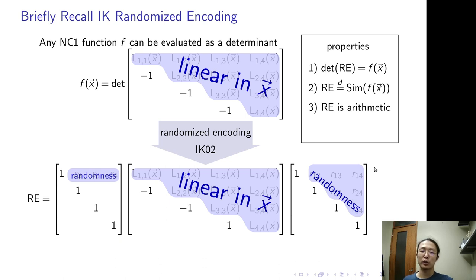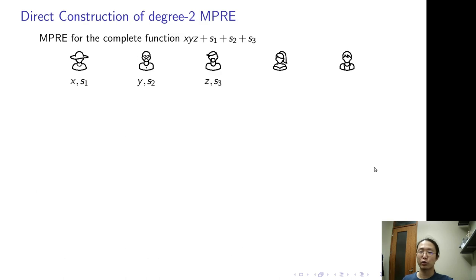It is private. It is also arithmetic. As you can see, it only uses black box field operation. And very importantly, this randomizing encoding is a degree 3 function on input and randomness. As corollary, it is sufficient to just construct MPRE for a degree 3 function.